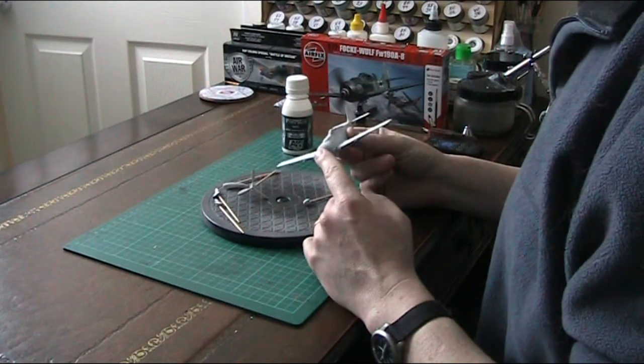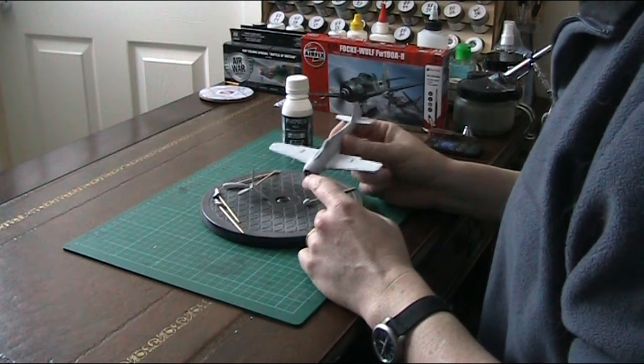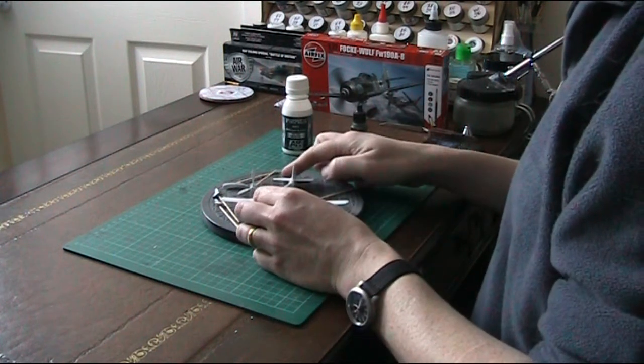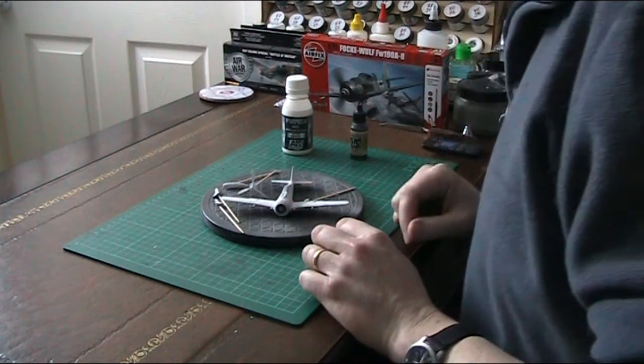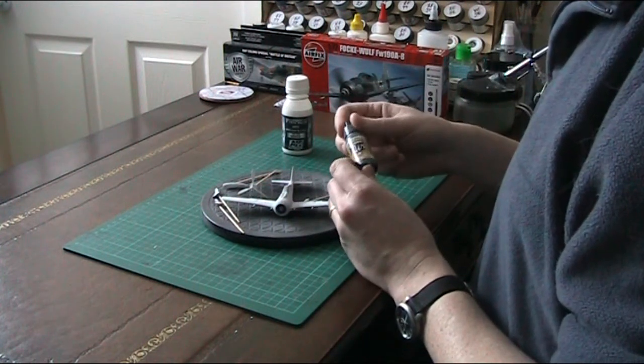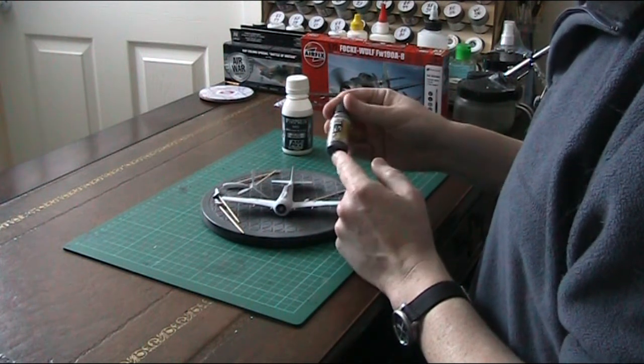Once it actually gets painted up and gets some panel line wash in there, it's really going to pop out. Before I do that, before I get that painted, I do want to do a bit of pre-shading. For that, I'm going to use NATO black, Vallejo Model Air.